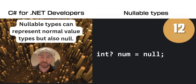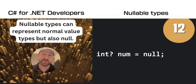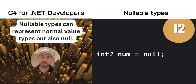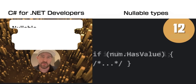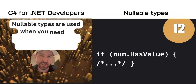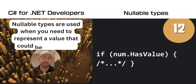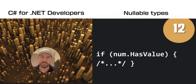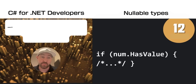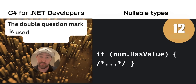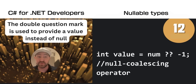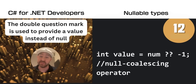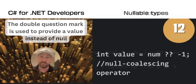Nullable types are really useful. They can represent values, but also null. You use them when you need a value that could be undefined at the time. Using the double question mark operator, we're setting the value to minus one if num is null. Pretty useful.